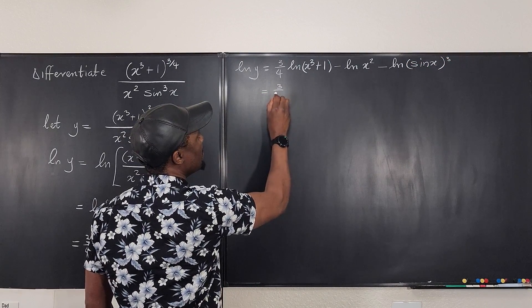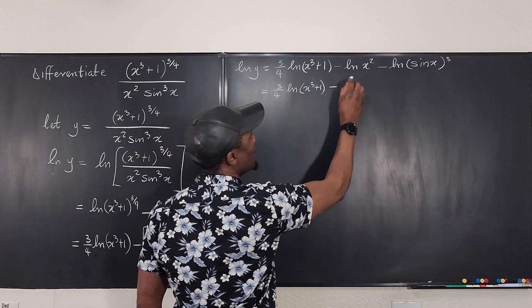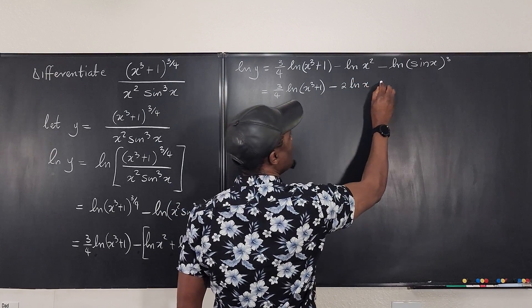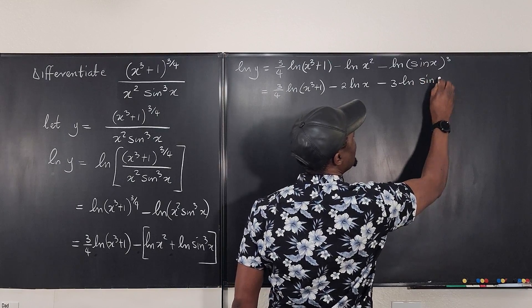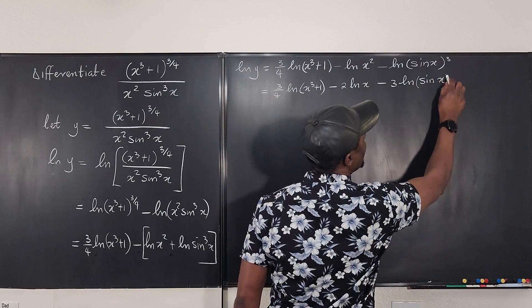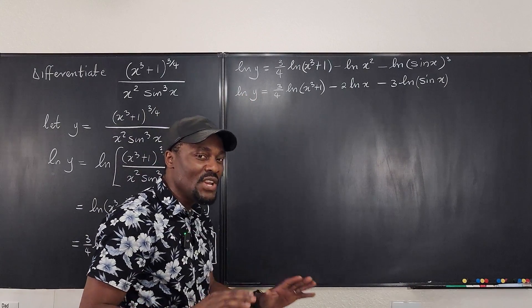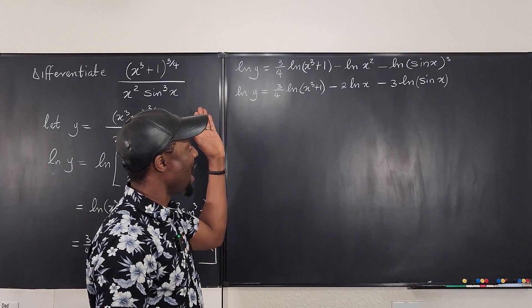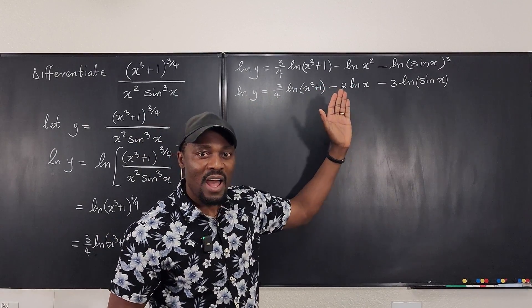This is 3 over 4 ln of x cubed plus 1 minus 2 ln of x minus 3 ln of sin x. And that's it, and that's ln of y. I have not done any differentiation, but I have chosen to rewrite this weird combination as something I can tackle one after the other.